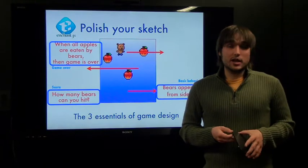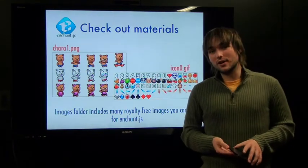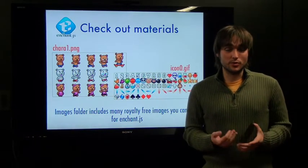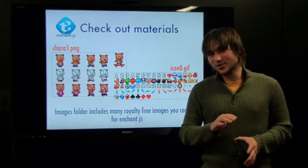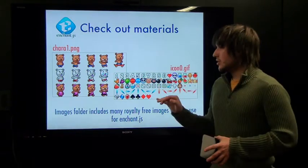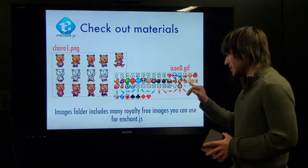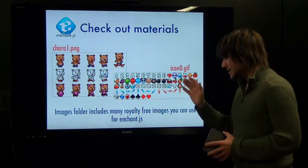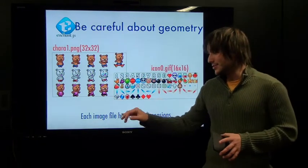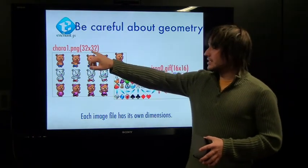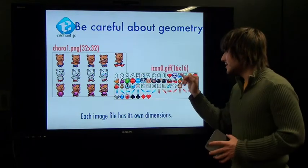Next, what you need to do after you have your sketch and you've decided on your theme is you need to check out your materials. This is probably one of the most difficult parts when you are starting out as a beginning game developer, because you're not going to have many materials to work with. But Enchant.js comes with a very large royalty-free image library full of sprite sheets and images you can use for your games. Here you can see Kara1.png is one of them that has an assortment of bears for you to use. And there's Icon0.gif which has so many different things in here — from fruit to animals to dice to lasers to gems and everything. You need to be careful of your dimensions because Kara1.png has 32 by 32, so each frame is 32 pixels by 32 pixels. Each frame in Icon0.gif is 16 pixels by 16 pixels.